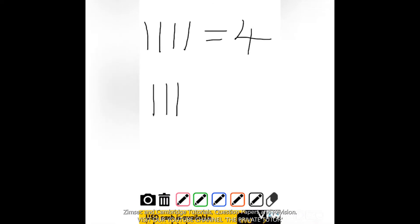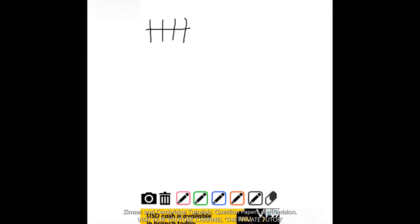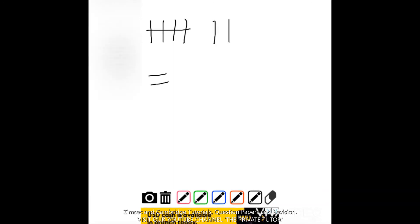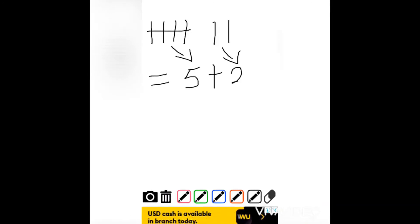One, two, three, four and a crossing stick gives us five sticks — and that's now a bunch of sticks. How do you calculate when there are more than five sticks? Here's how: one, two, three, four and a crossing stick plus one, two. You simply add a bunch plus those two sticks: five plus two gives us